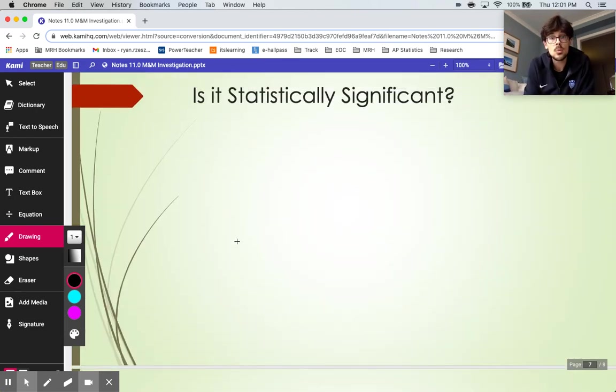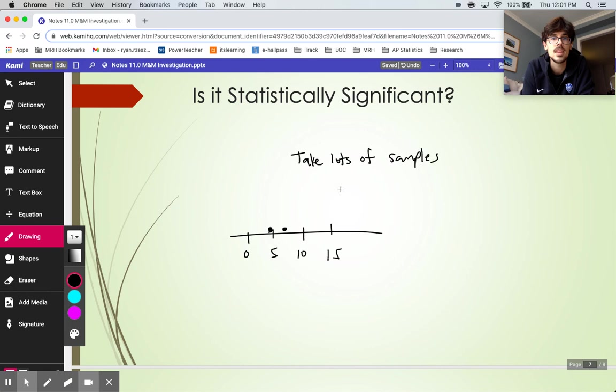So what we'd really need to do is just repeatedly take samples of 50 and graph what we get each time. We got a 4.9. Maybe the next time we do the same process, we get like a 6.2. And we would just take lots of samples and calculate the chi-square test statistic each time.